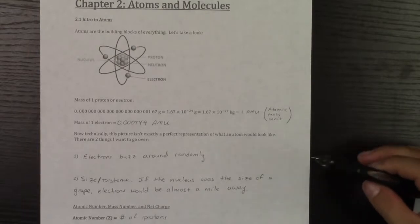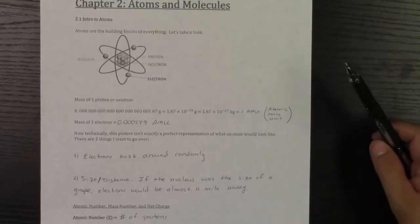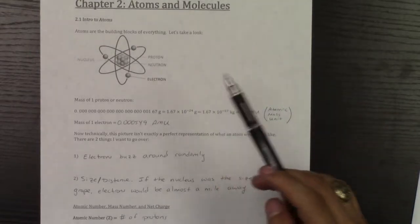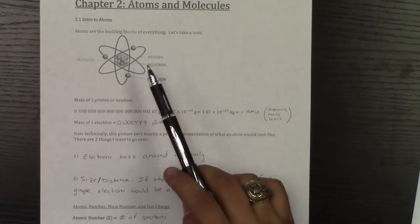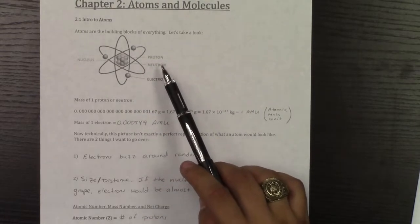Let's go ahead and introduce what an atom is. An atom is the building block of everything. An atom consists of protons, neutrons, and electrons.